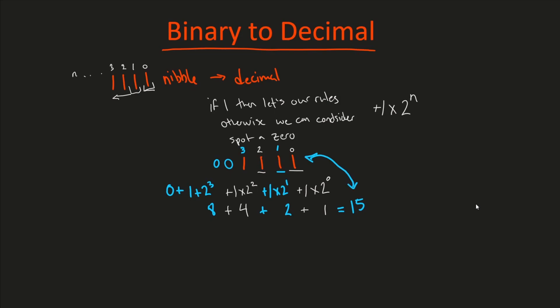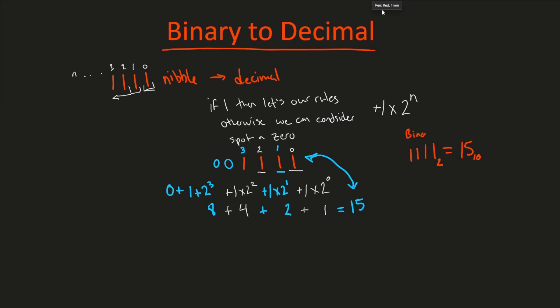How fantastic — great job if you followed along. We can officially say that one, one, one, one is equal to 15 in decimal form. To denote decimal form, I'm going to put a 10 here because it's base 10. And for binary, I'm going to put base two so we know — this is saying binary form, and this is saying decimal form. How wonderful. We figured that one out, so now we can use this technique to solve our next number.